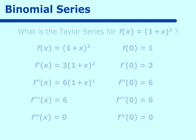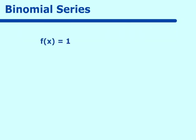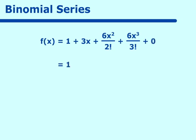Putting this into our Taylor polynomial, we get f of x equal to 1 plus 3x over 1 factorial, plus 6x squared over 2 factorial, plus 6x cubed over 3 factorial, plus 0. Computing this gives 1 plus 3x plus 3x squared plus x cubed, which is exactly the expansion of (1 plus x) cubed using the binomial theorem.